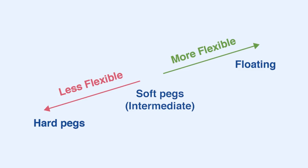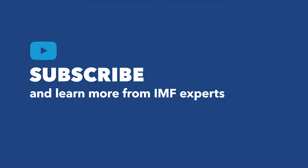To sum up, the exchange rate regimes implemented by countries can be divided into three broad categories, from hard pegs to flexible exchange rate regimes. The degree of exchange rate rigidity is determined by the extent the countries intervene to affect the exchange rate.